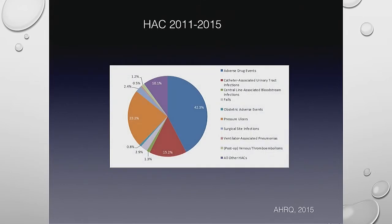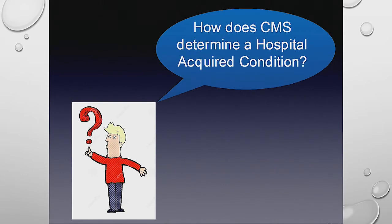This graph breaks down the percentages of all 11 hospital-acquired conditions. Pressure ulcers represent 23% of all hospital-acquired conditions, next to adverse medication events. So we take a pretty significant chunk of the pie in terms of ulcers acquired in the hospital. How does CMS determine what is a hospital-acquired condition?